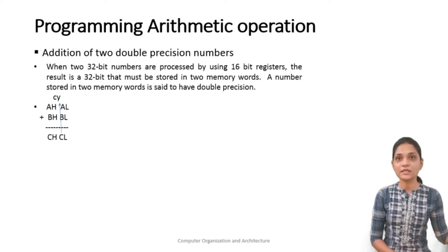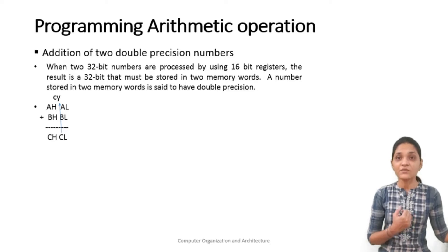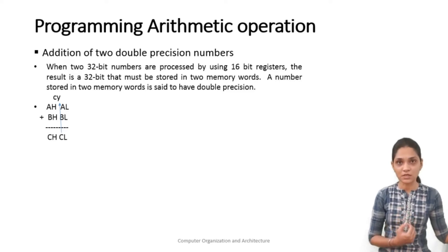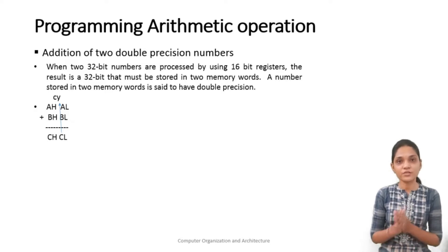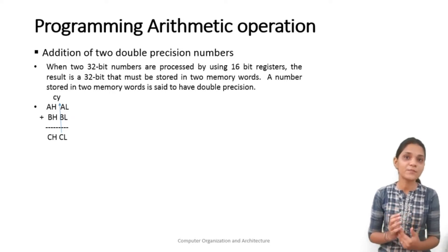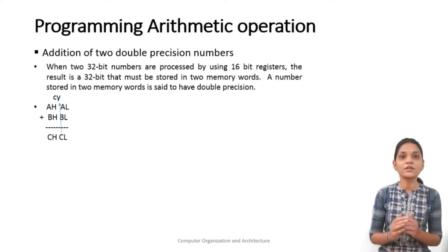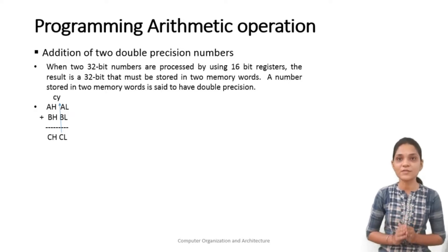Here we will see the arithmetic operation first, and we will see the addition of two double precision numbers. When we are adding two 32-bit numbers or processing 32-bit numbers using the 16-bit register, that means you are processing data double the capacity of your register. So at that time your data is said to be in double precision number format.